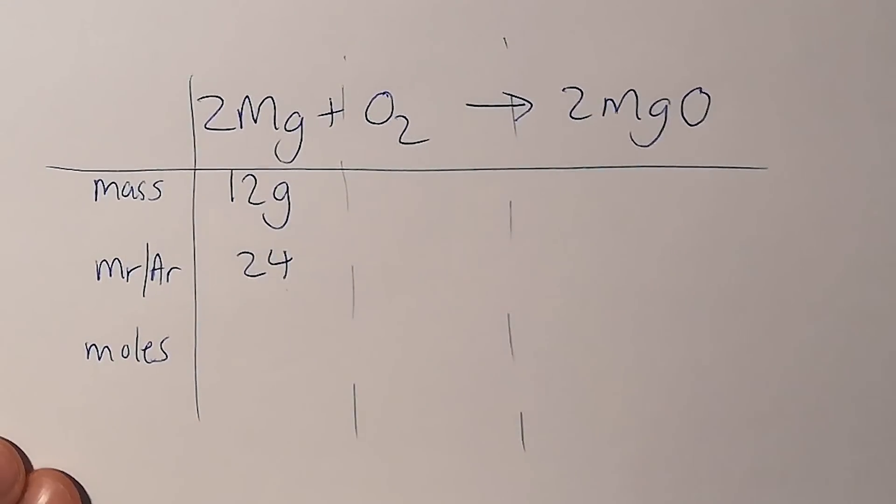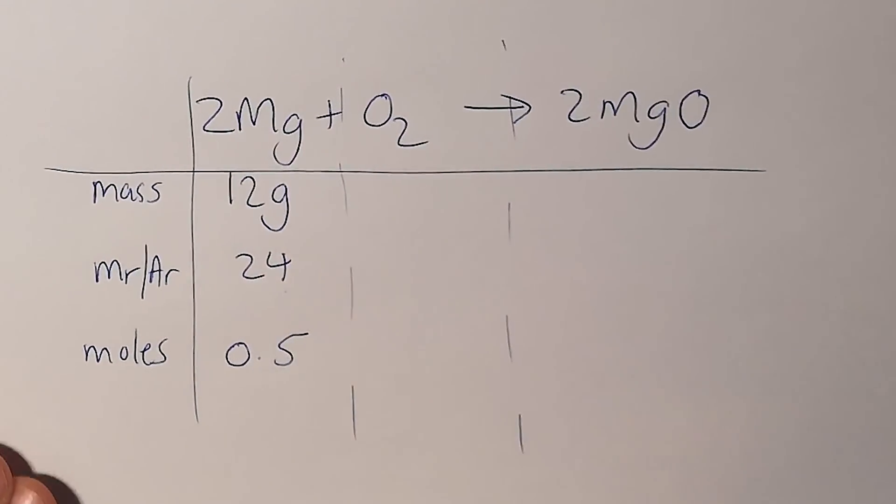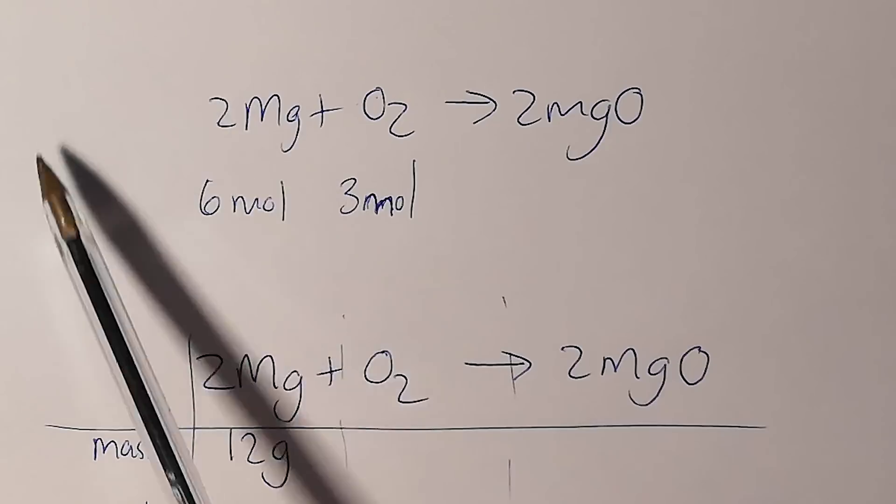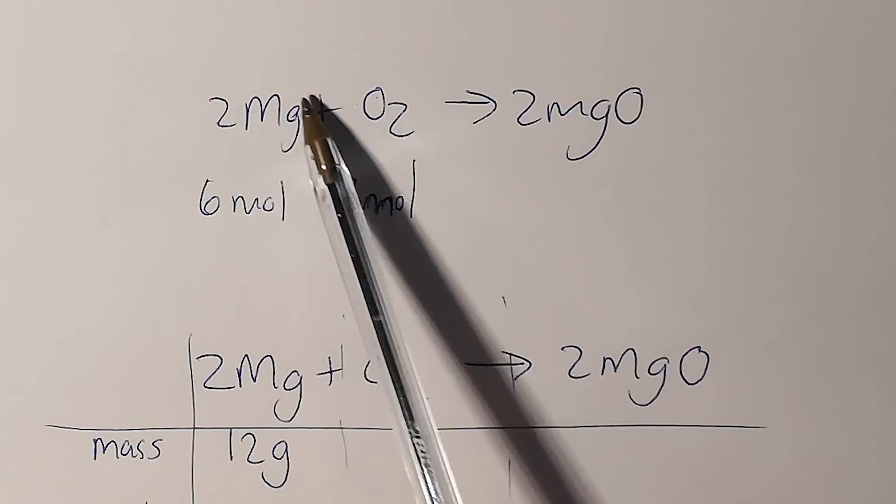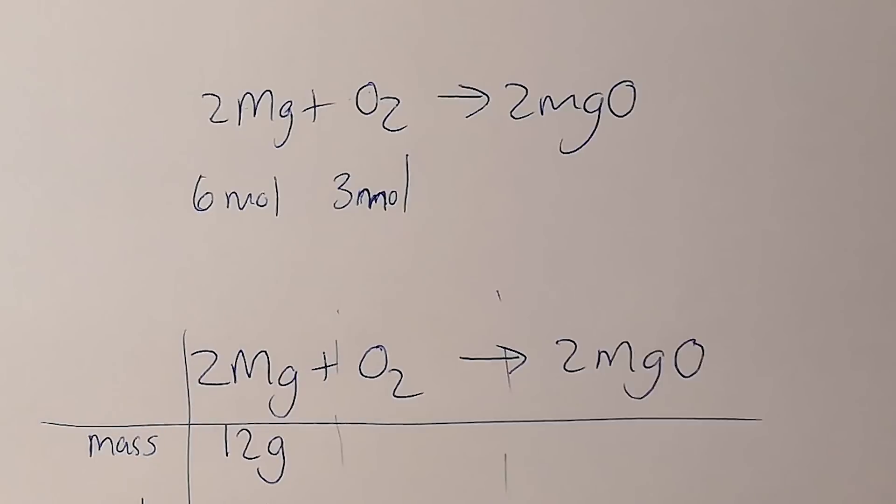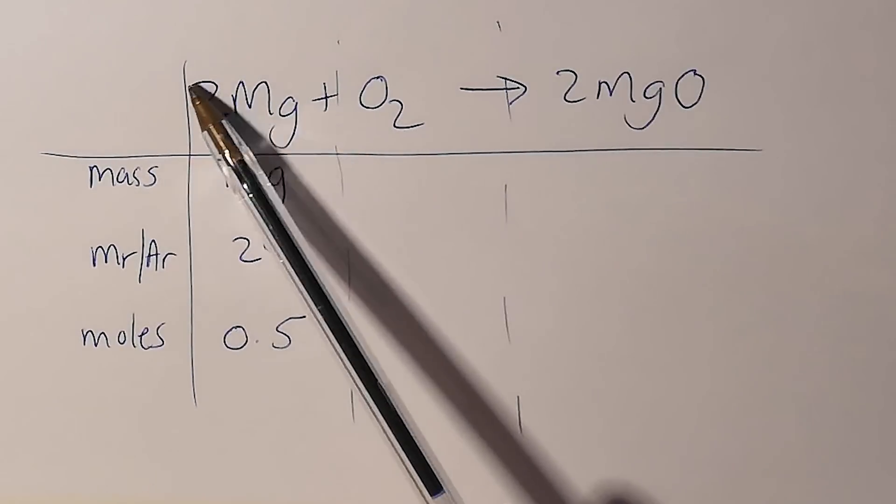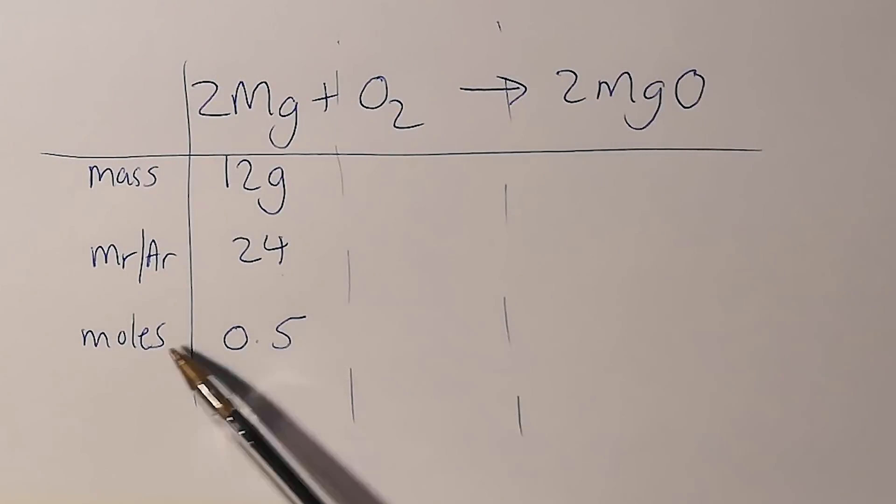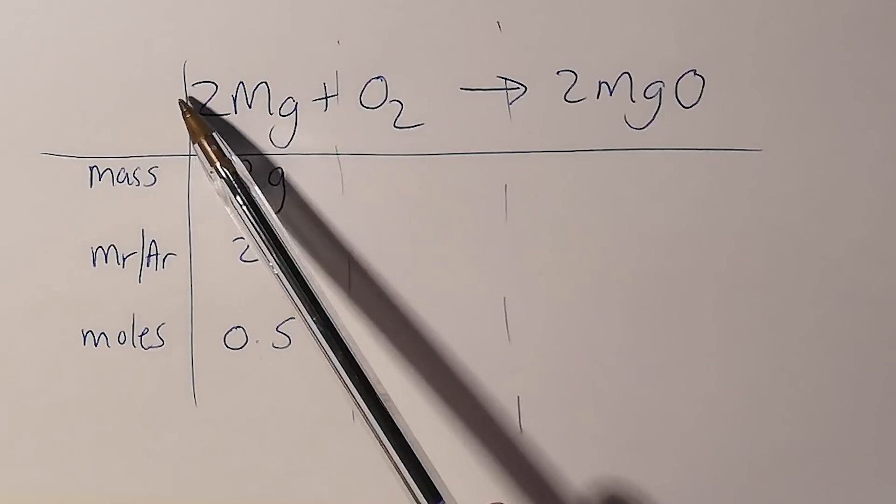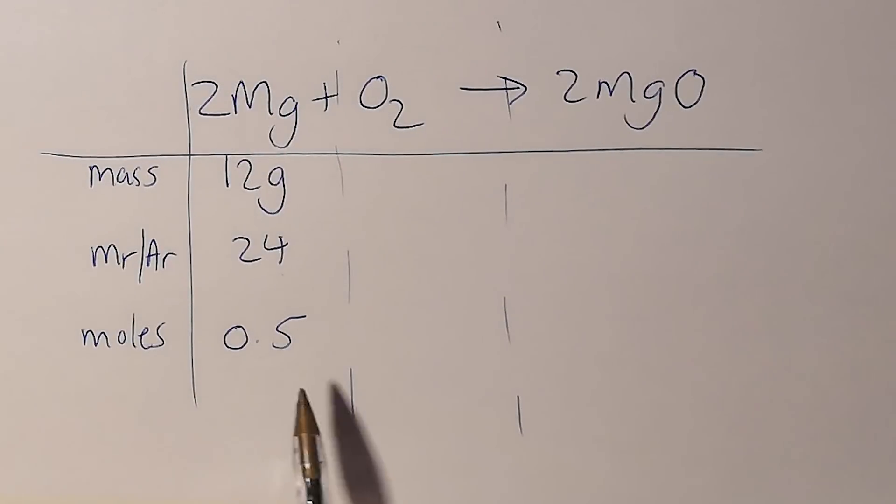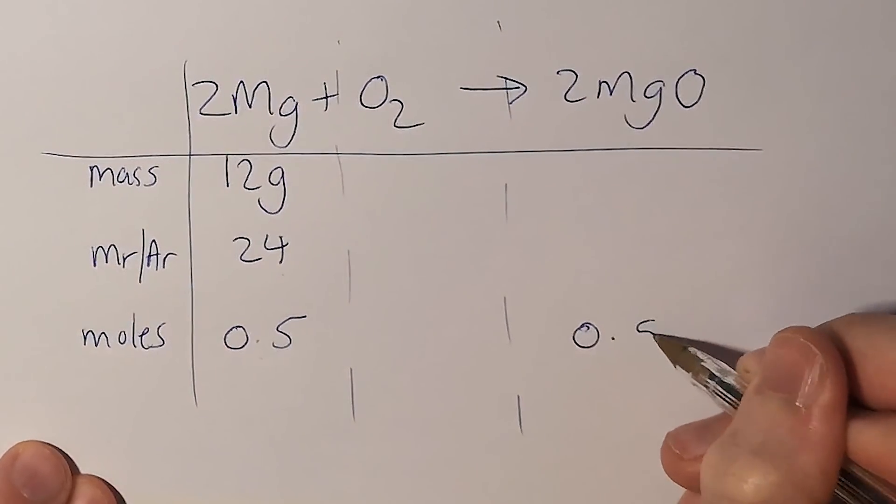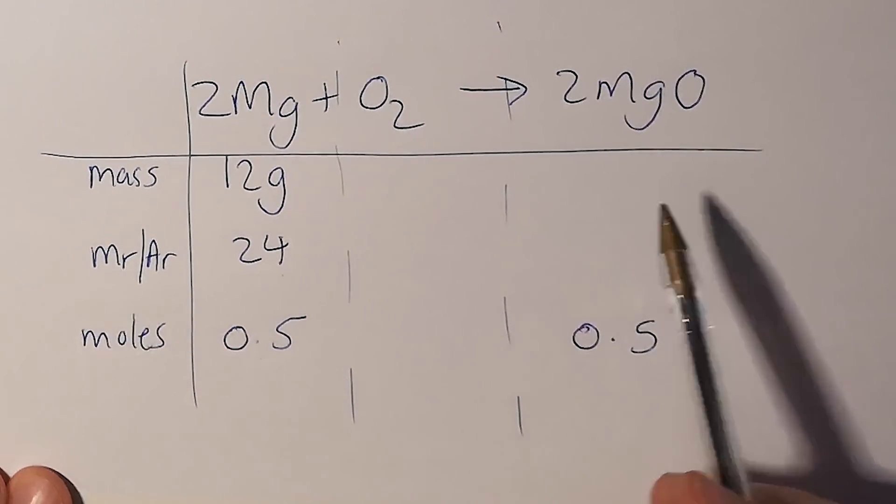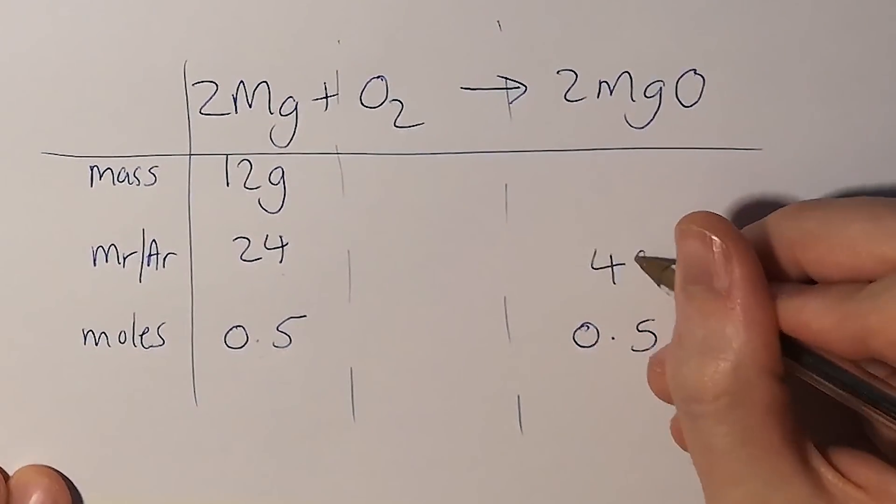You may be wondering why I've not used this 2 here to work out how many moles I've got. This is a ratio of how many moles of magnesium reacts with how many moles of oxygen. What this means is for every two moles of magnesium I will make two moles of magnesium oxide. I've only got 0.5 moles, and basically whatever I have here is what I'm going to make here. So I've got 0.5 moles, so I will make 0.5 moles of magnesium oxide.